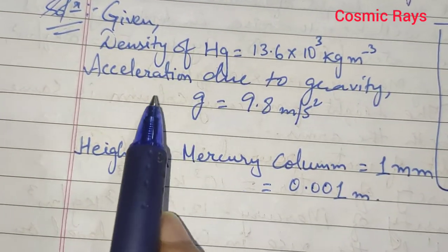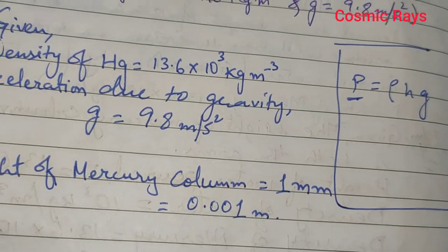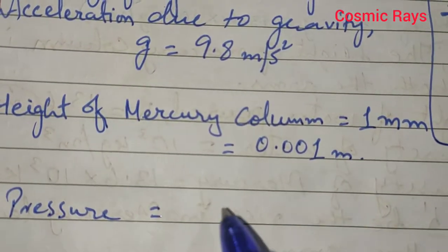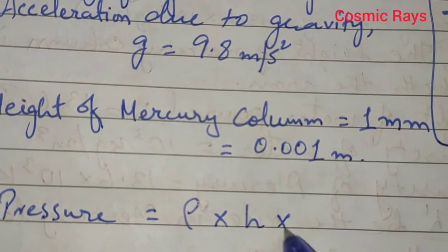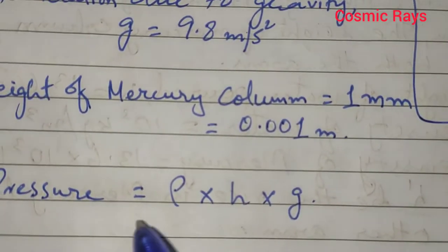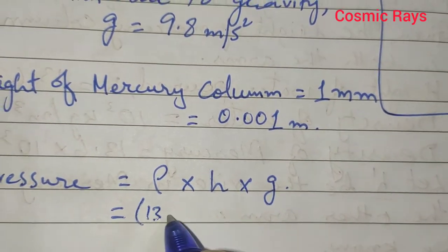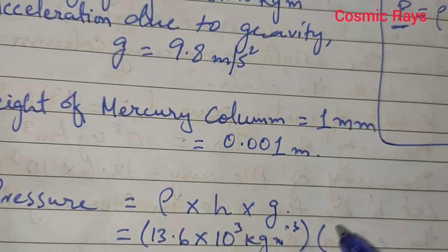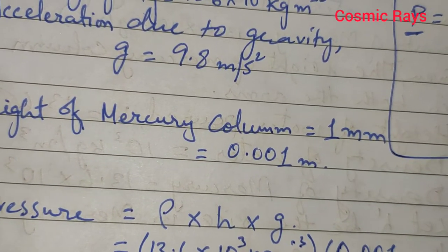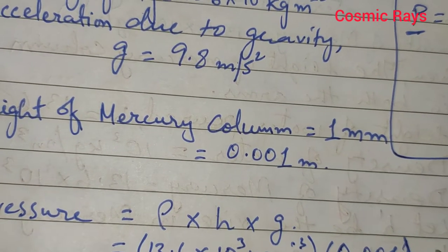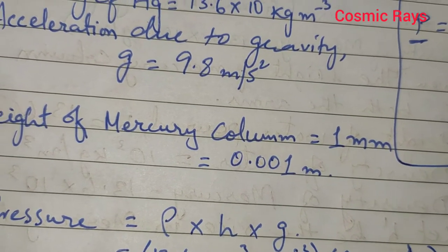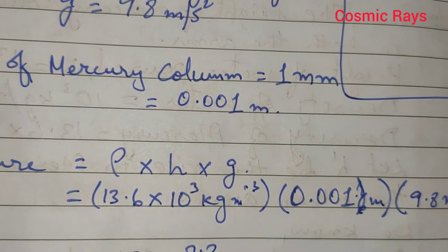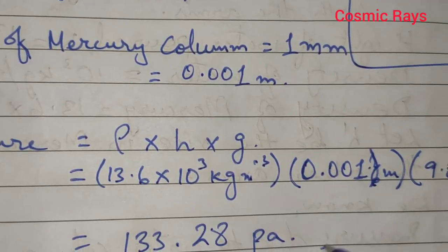Now we have the height, the acceleration due to gravity, and the density. We need to find the pressure. Pressure equals density × height × acceleration due to gravity: 13.6 × 10³ kg/m³ multiplied by 0.001 m multiplied by 9.8 m/s². After multiplying, we get 133.28 Pascal. That is the answer.